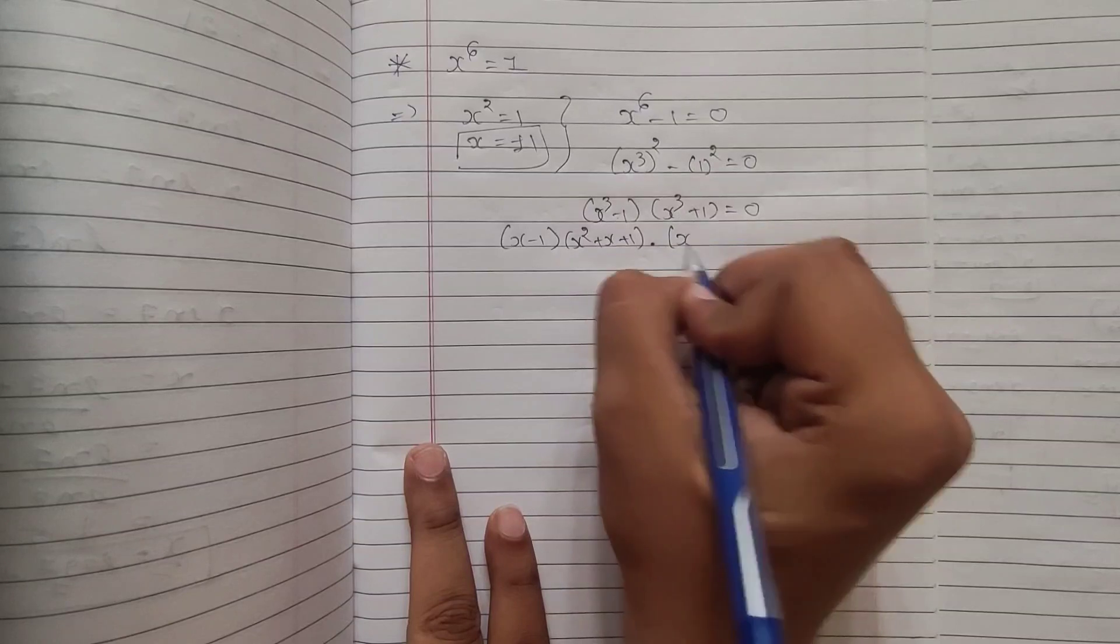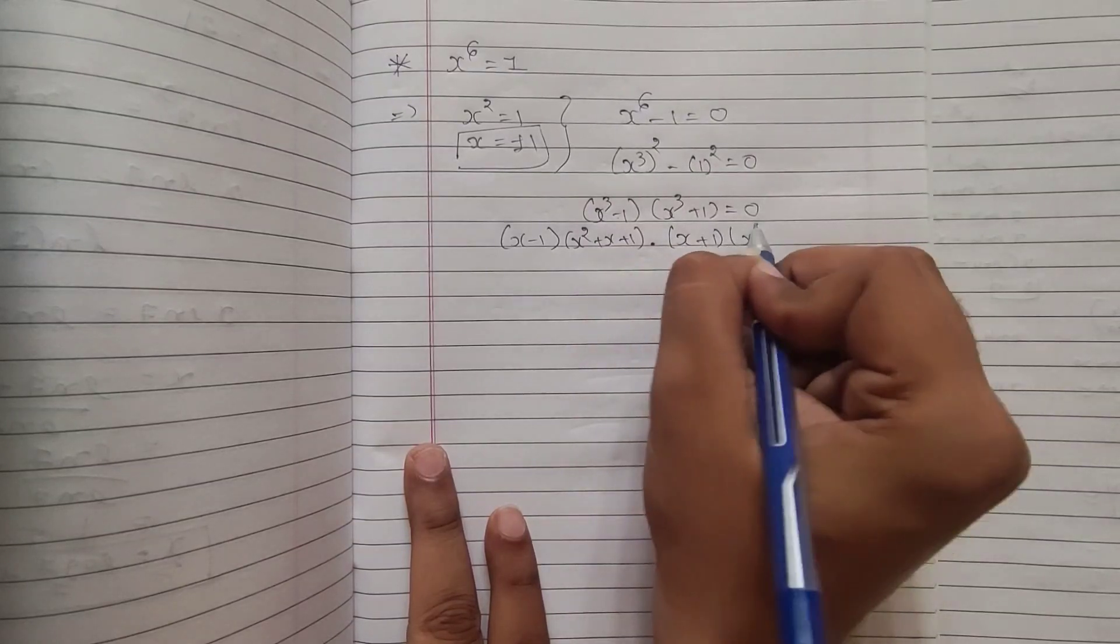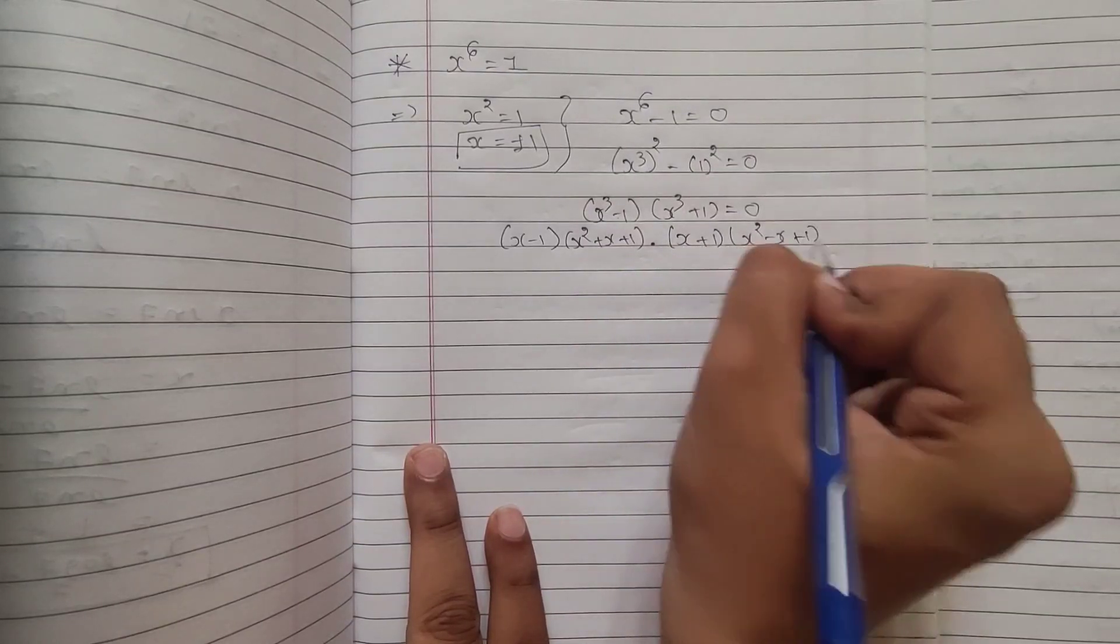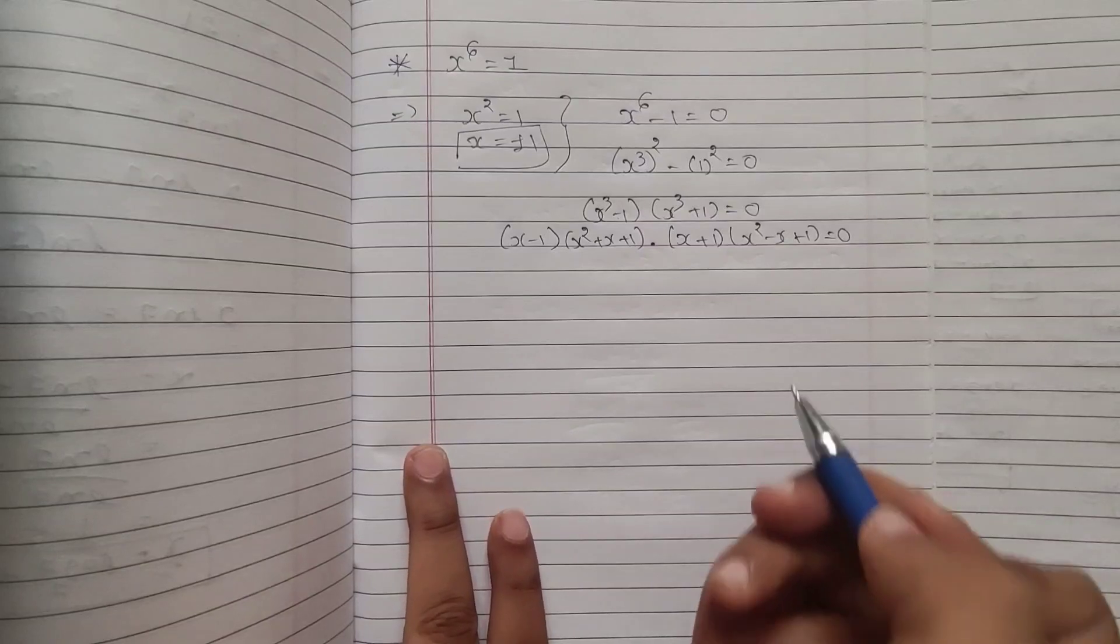Now, x cube plus 1, x plus 1 into x squared minus x plus 1 equal to 0. I am sure all of you got this.